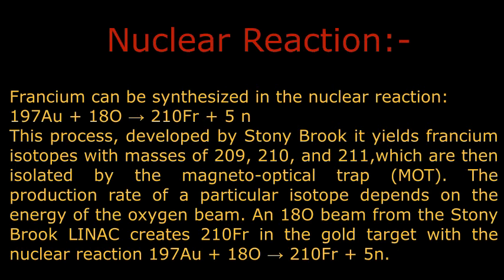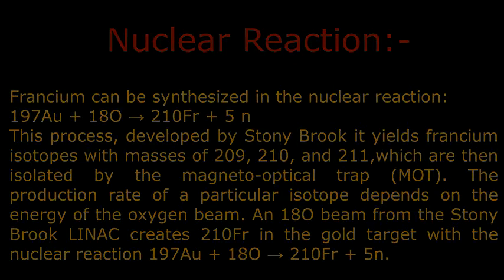This process was developed by Stony Brook. It yields francium isotopes with masses 209, 210 and 211. These are then isolated by a magneto-optical trap. The production rate of a particular isotope depends on the energy of the oxygen beam. An 18O beam from the Stony Brook linac creates francium-210 in the gold target with the nuclear reaction 197Au + 18O → 210Fr + 5 neutrons.